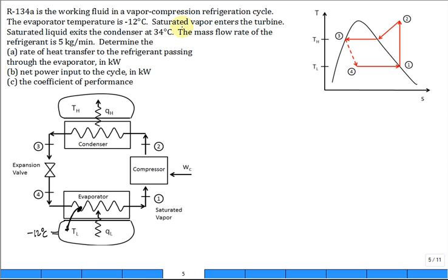Saturated vapor enters the turbine. Saturated liquid exits the condenser, sat-lic over here, saturated liquid at state 3, and it comes out at 34°C.